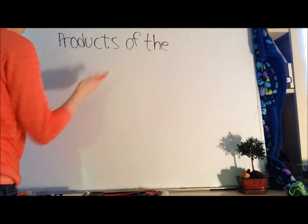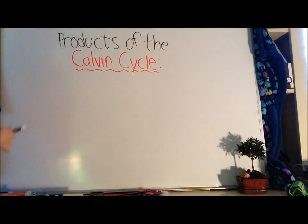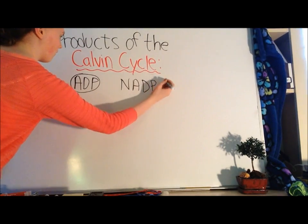Let's review the products of the Calvin cycle. So what did we accomplish here? We generated molecules of ADP and NADP+, both for use in the light reactions.